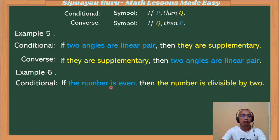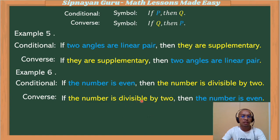Example number six: if the number is even, then the number is divisible by two. So again, the converse: if the number is divisible by two, then the number is even. This conclusion becomes our hypothesis, and the number is even becomes our conclusion.